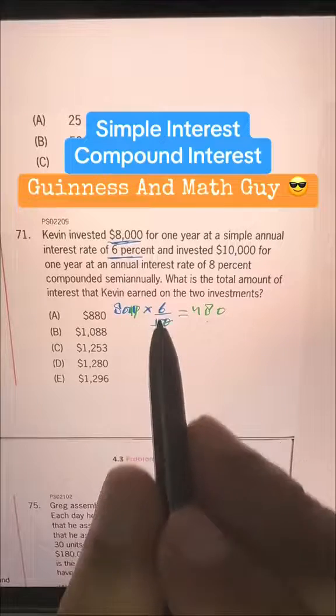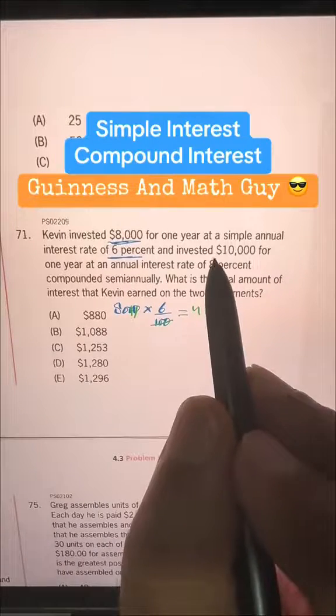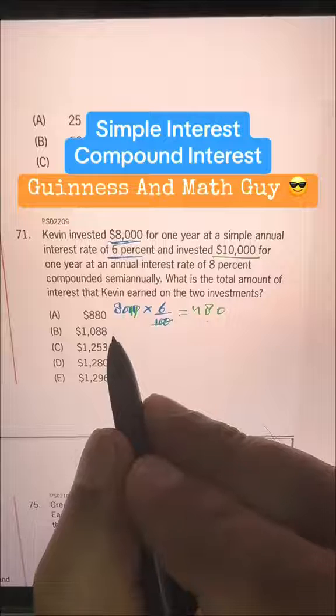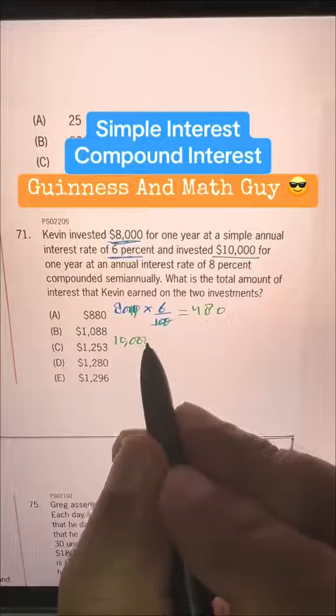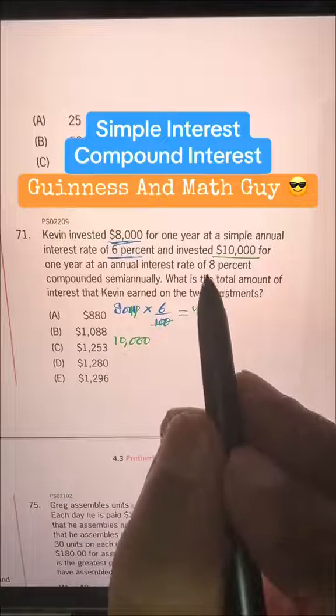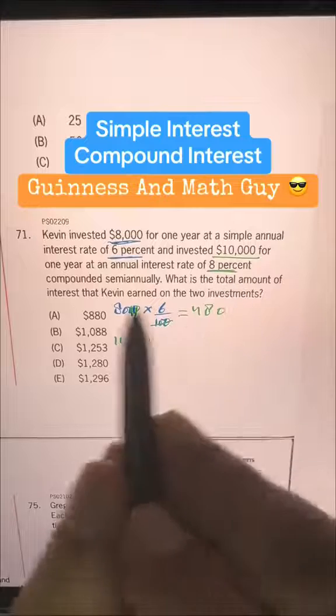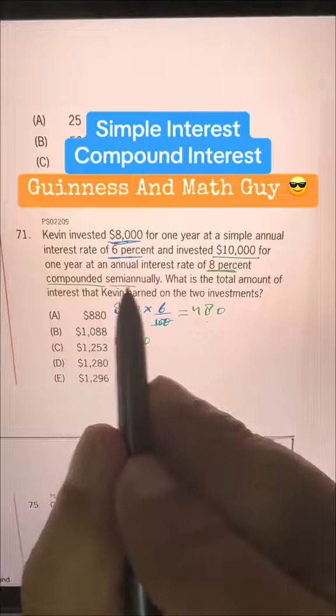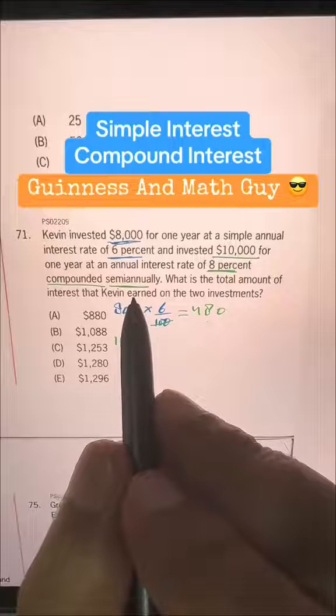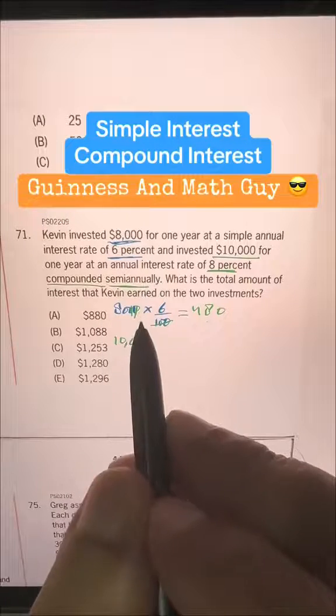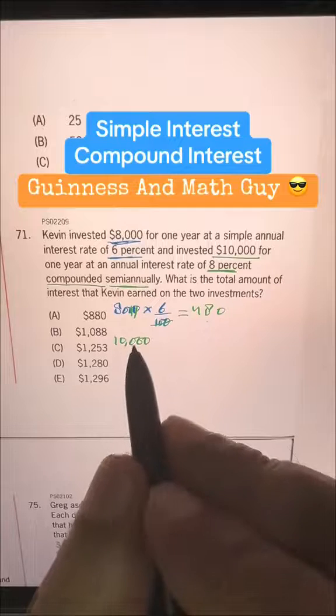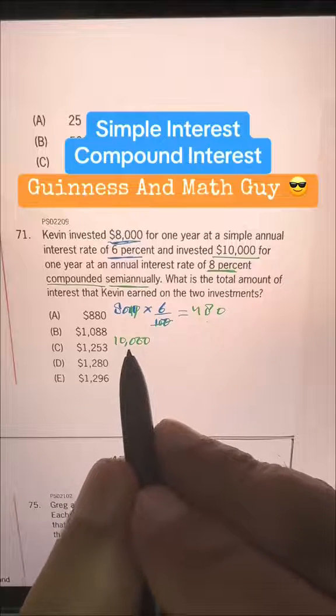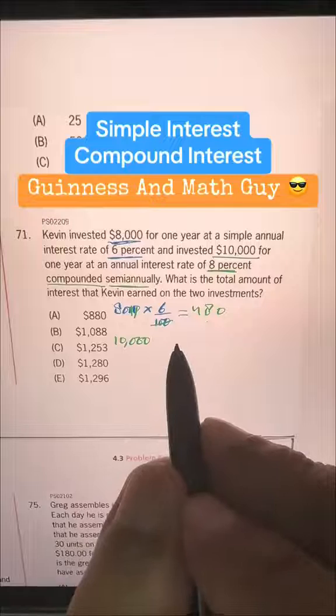Second investment, just be careful here. In second investment, it's $10,000. So we have $10,000. And the rate is 8% but it's compound interest, not simple interest. And compounded semi-annually means after 6 months it will be compounded and then after one year. So we have to see this $10,000 will become how much in one year.